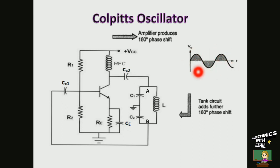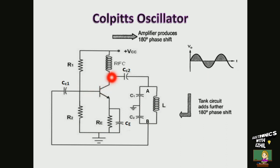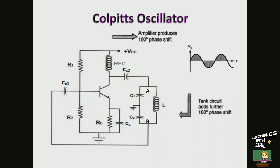But the amplitude of this signal is very low. The voltage across capacitor C2 is applied as the feedback signal, then it is amplified. Once again the amplified signal is applied to the feedback network, and this process is continued so that the circuit adjusts itself to get A·β equal to 1, resulting in sustained oscillations.